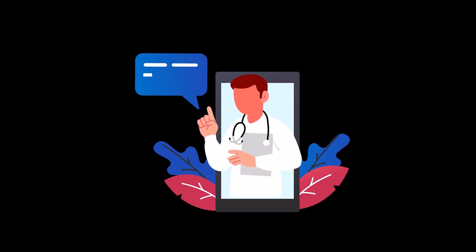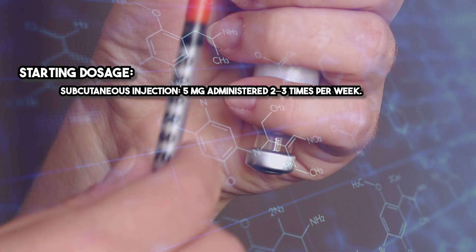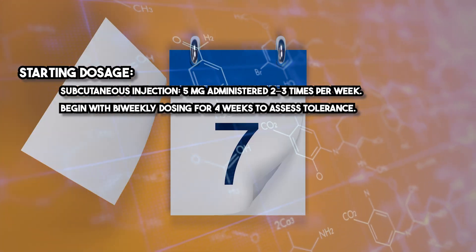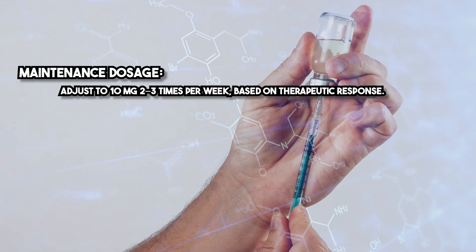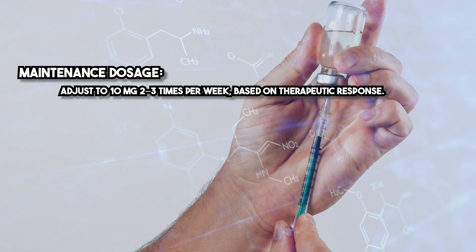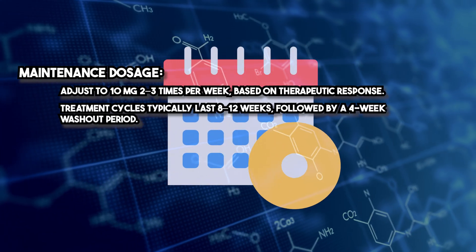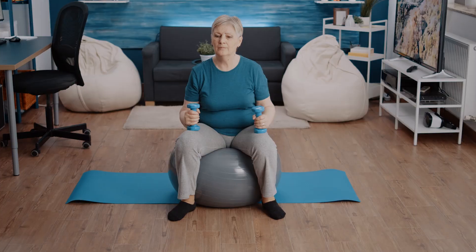Dosing MOTSC effectively requires careful planning. Starting dosage: subcutaneous injection, 5 milligrams administered two to three times per week. Begin with bi-weekly dosing for four weeks to assess tolerance. Maintenance dosage: adjust to 10 milligrams two to three times per week based on therapeutic response. Treatment cycles typically last eight to twelve weeks, followed by a four-week washout period. Administering MOTSC alongside dietary and lifestyle interventions enhances its metabolic benefits.